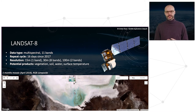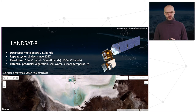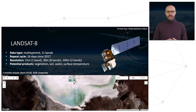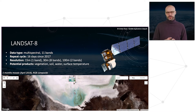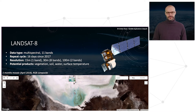The 100-meter resolution refers to the thermal portion of the spectrum, related to temperature. That's why potential products include surface temperature. Recently, Landsat 9 has been launched with similar characteristics.